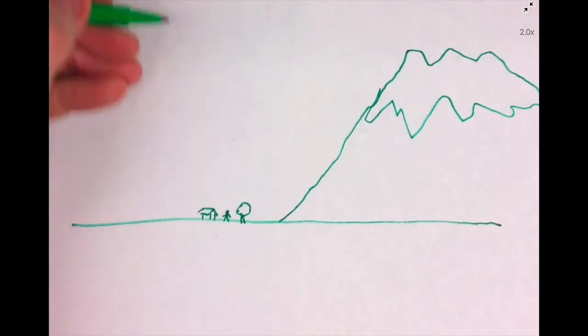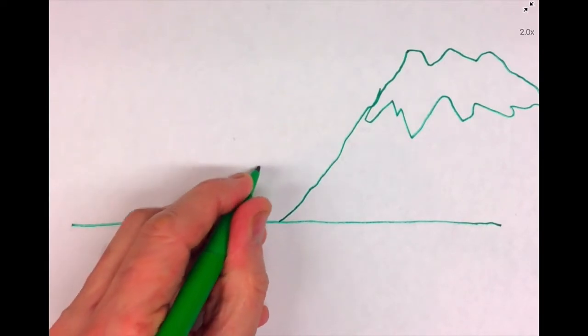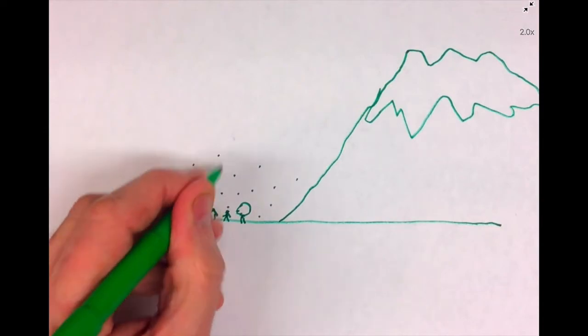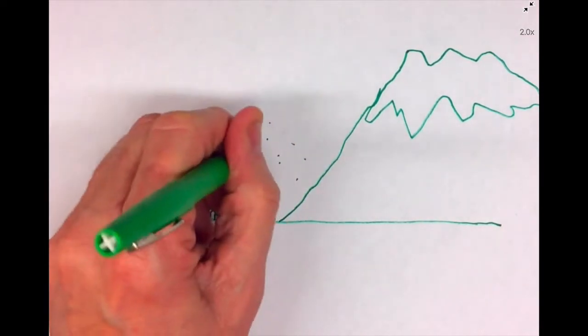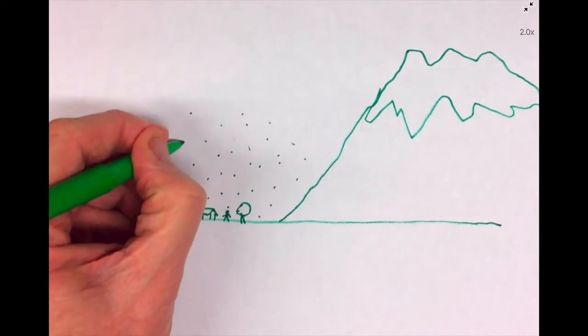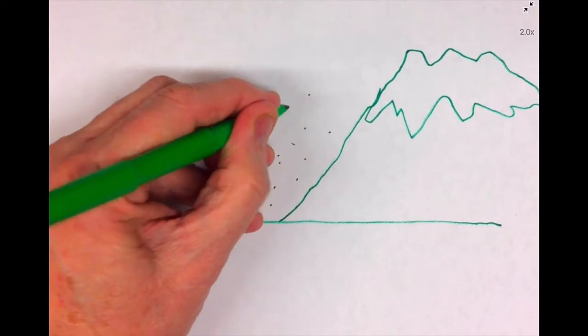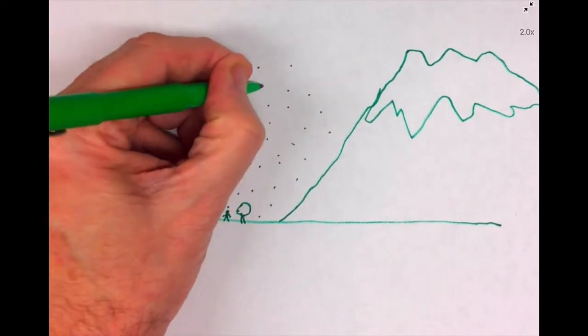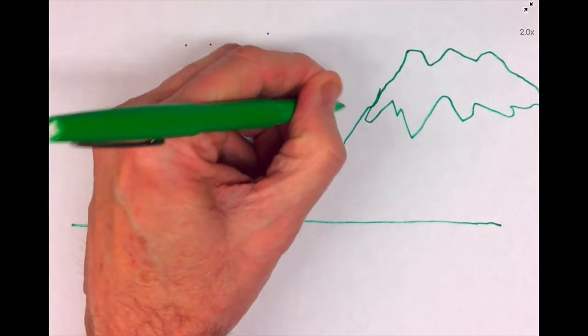So now we're going to try to draw the atmosphere. The atmosphere of course has air molecules in it, so we're going to put some dots to represent air molecules. Try to evenly space them.